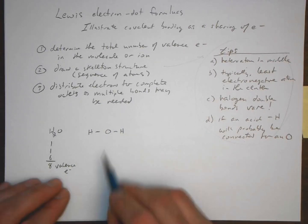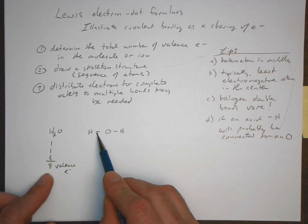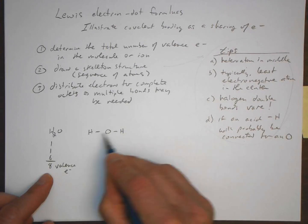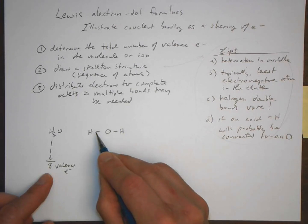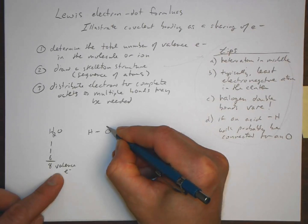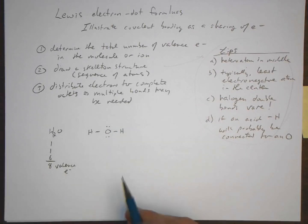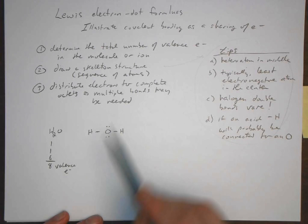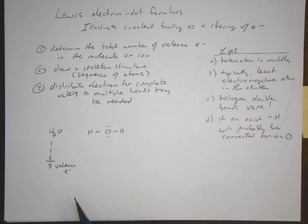Looking at this structure, each bond has two electrons. We account for all eight valence electrons — four in the two O-H bonds and four as two lone pairs on oxygen. This structure shows the bonds and gives oxygen its correct octet. This is a very good Lewis formula for the water molecule.